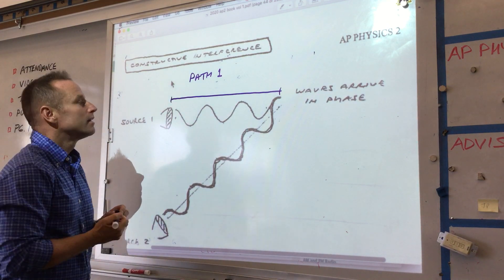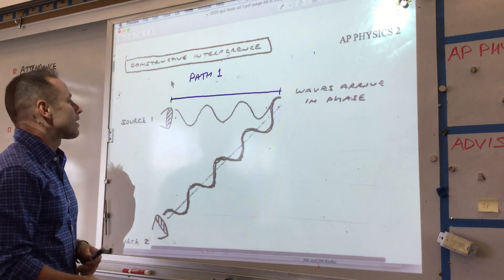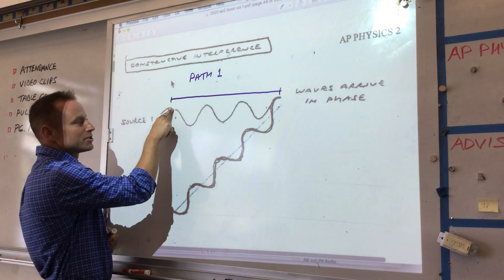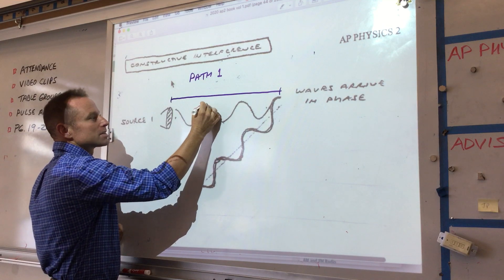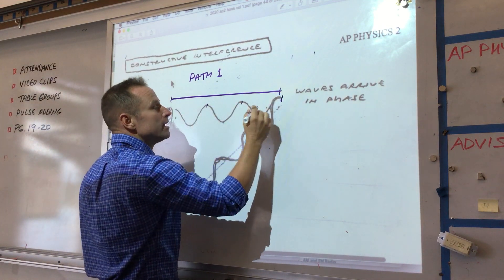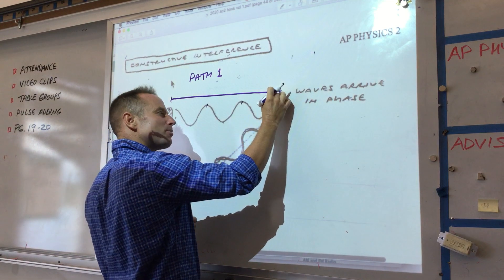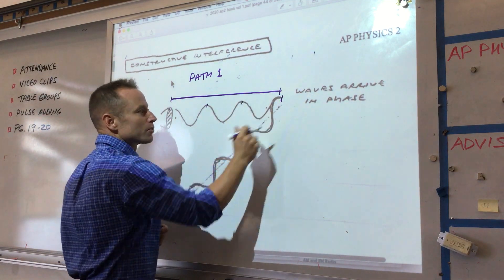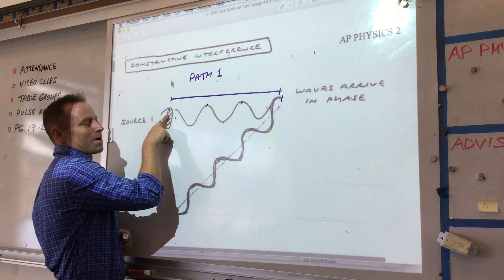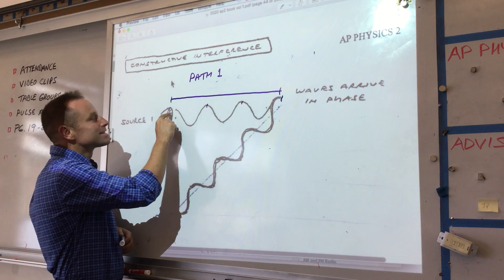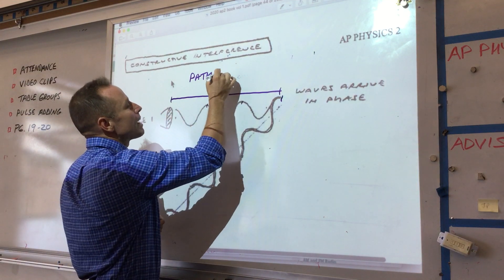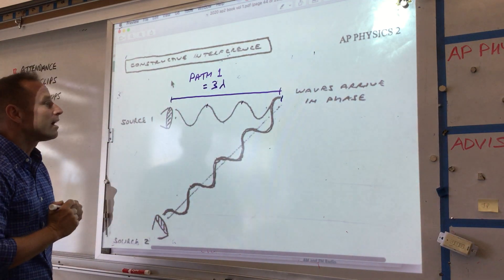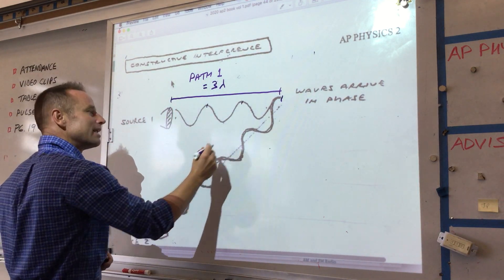One way to measure path one is to see how many wavelengths fit in it. Counting the peaks: one, two, three — so path one is three wavelengths long. Be careful how you count: don't start at one, just like when you're born you're not one yet. So path one equals three wavelengths.